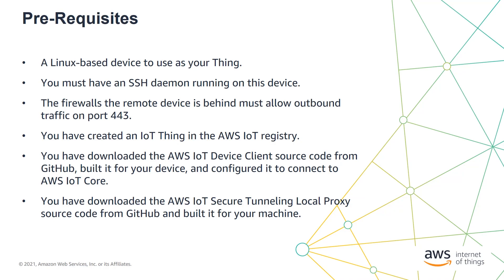In this video, I'll present a demonstration of one particular use case of Secure Tunnelling, namely an SSH connection to a Raspberry Pi. The prerequisites shown here are for this particular demo, not the Secure Tunnelling feature more generally. First, you need a Linux-based device to use as your IoT thing. A Raspberry Pi or Linux PC is sufficient for the demo. Next, the device must have an SSH daemon running. If you wanted to, for example, use Secure Tunnelling to access FTP, you would of course need an FTP server running, likewise for any other service.